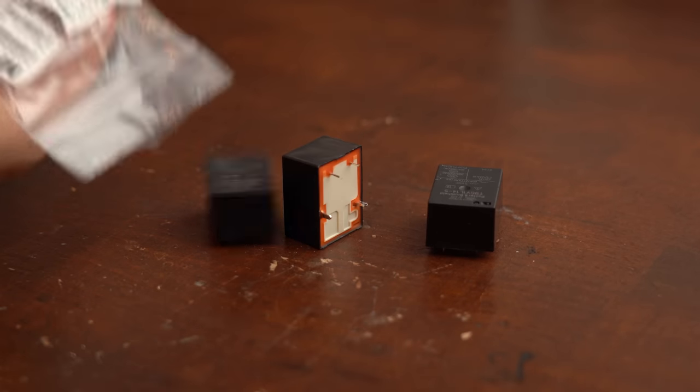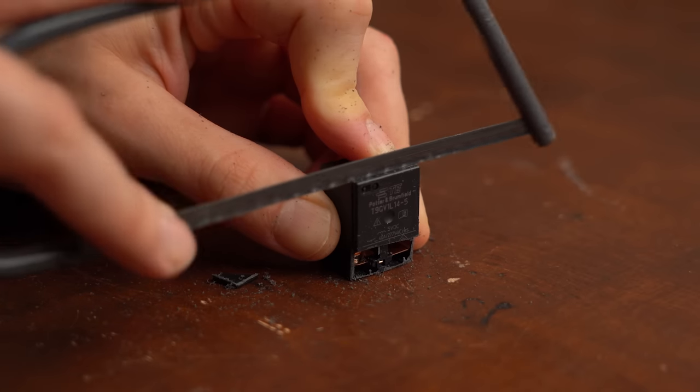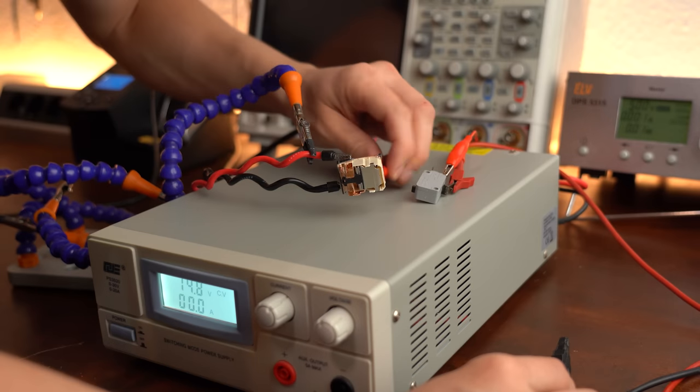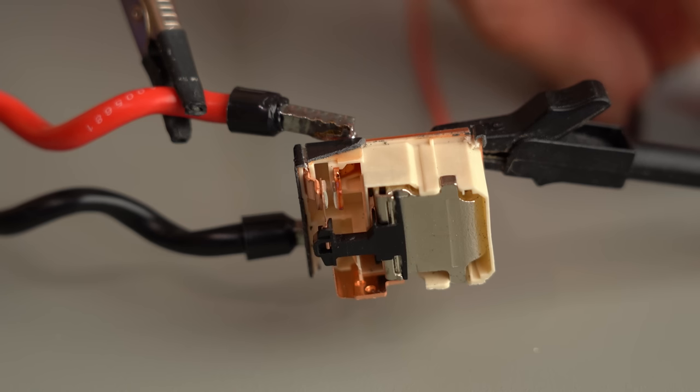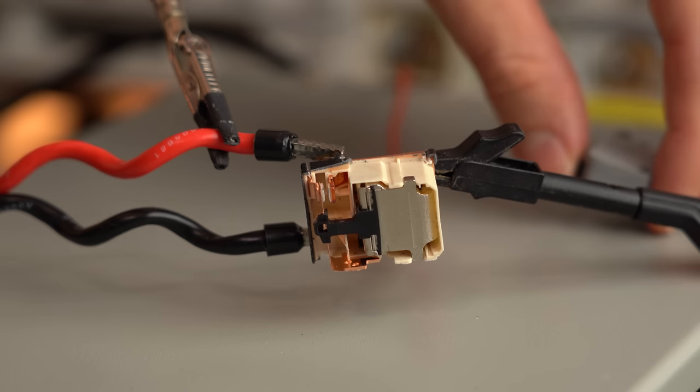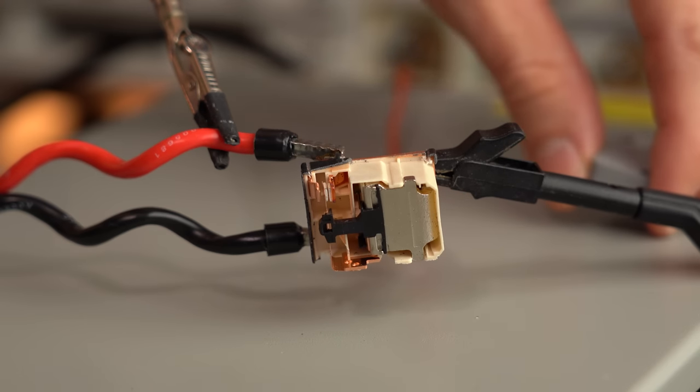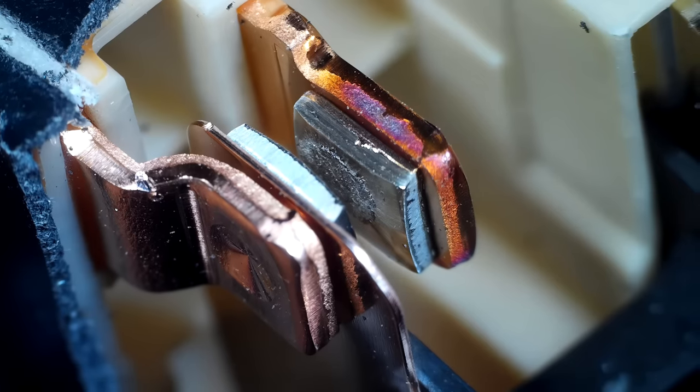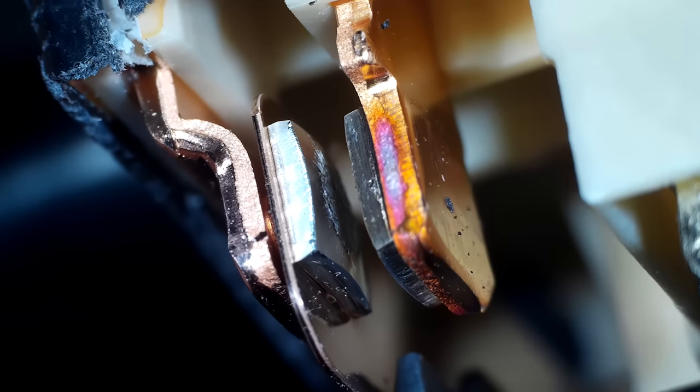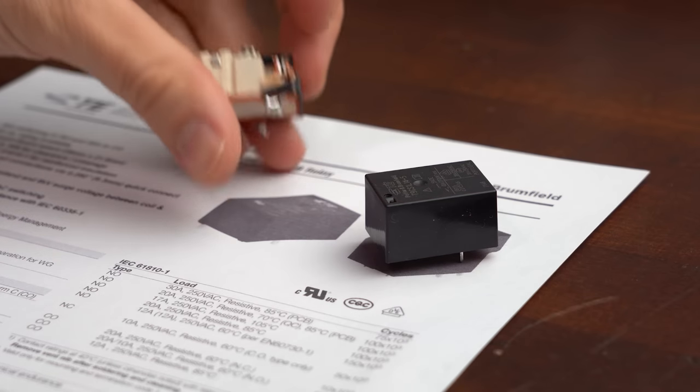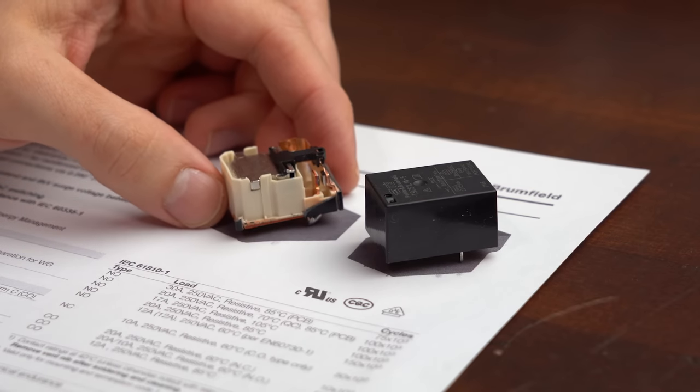So needless to say I got myself some of them and immediately opened one up to repeat the same experiment as before. Now as expected the arcs were still present but way less noticeable and during my testing session I never got the relay to stick. The contacts of course also suffered a bit but way less than the other relay. And that basically means that such a relay can be a solution to the sticking problem.